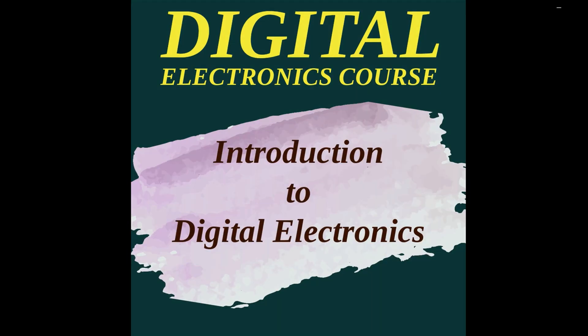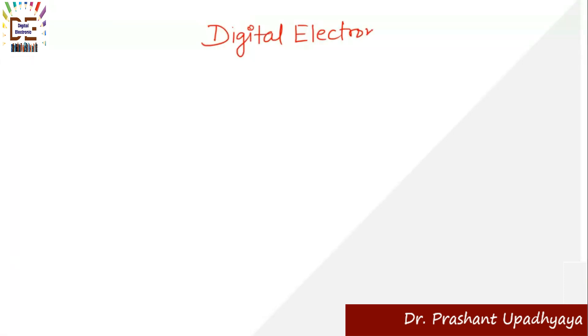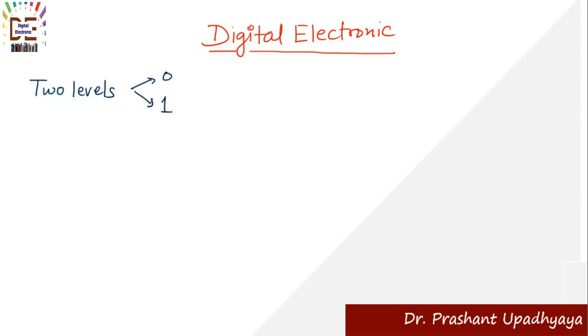We will give you an introduction about digital electronics — why we are going for digital electronics and what is the requirement of digital electronics. Whenever we talk about digital electronics, we are dealing with two levels: zero or one. That means we are talking about something known as binary. Digital means we are talking with respect to zero and one.